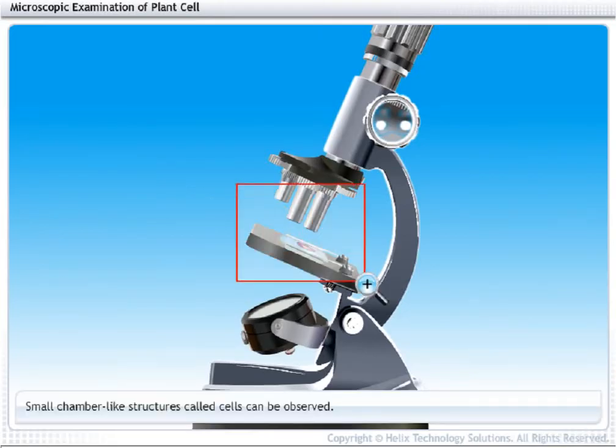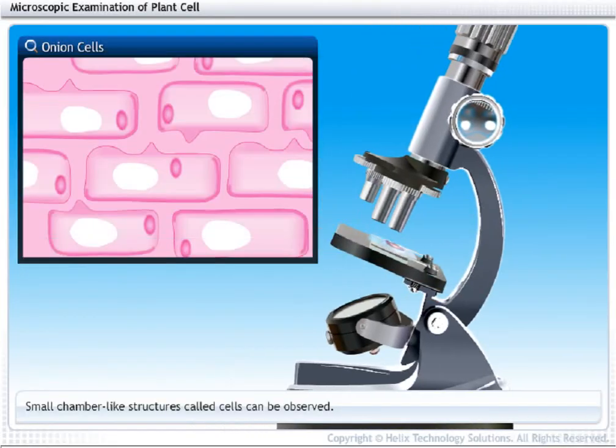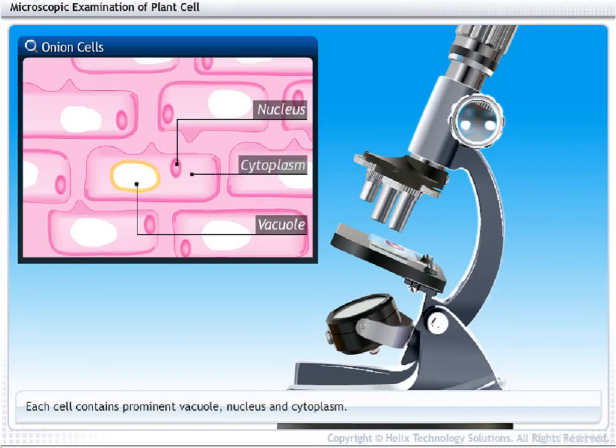Small chamber-like structures called cells can be observed. Each cell contains a prominent vacuole, nucleus and cytoplasm.